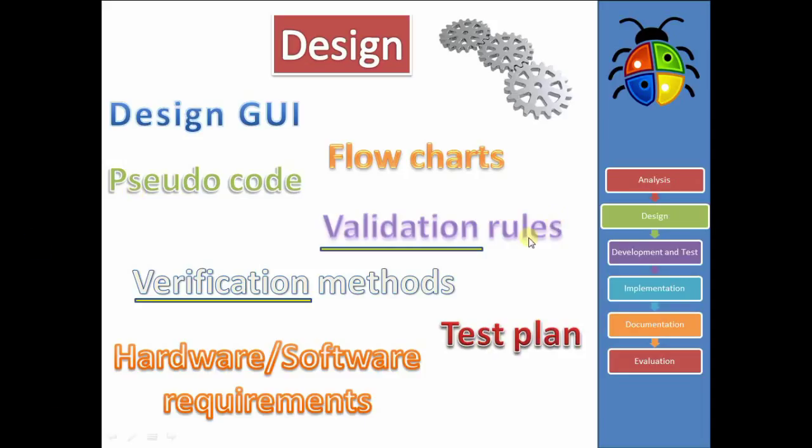Validation rules, we're going to come to later on, but making sure our data is valid. Verification methods is verifying that we copied things correctly. Again, we're going to talk about that in more depth. Test plans, how we're going to test the system. And this would tie in to some extent with our validation rules. And of course, things like hardware, software requirements. We would need lists of things we need.